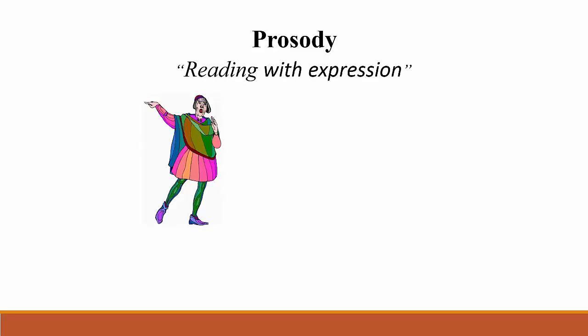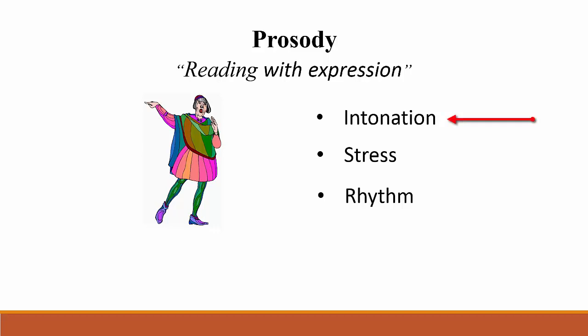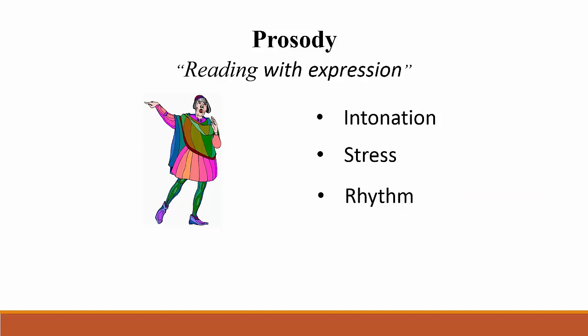Reading as if the text is actually being spoken brings up a key word in the definition: prosody. Whereas accuracy refers to recognizing the words without errors and rate refers to recognizing them rather quickly, prosody is sometimes defined as reading with expression. What we mean by reading with expression is that readers read words in connected text with appropriate intonation, stress, and rhythm. Intonation refers to the variation in pitch, like how a question sounds different than a statement. Stress refers to the emphasis placed on a syllable or a word in a sentence. And rhythm refers to how words are grouped into phrases across the length of a sentence.